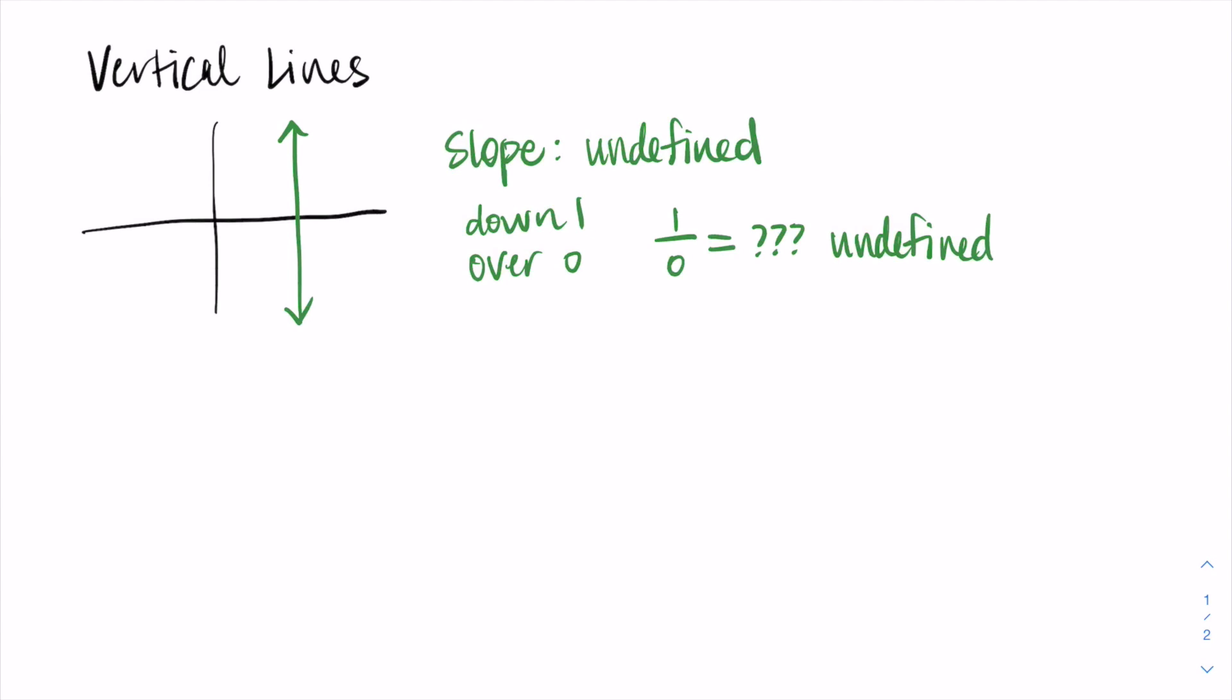For the formula, let's use a similar argument as horizontal lines. Points on the line have different y values, but the x value is always the same. We're always over the same amount of x. So we don't need to memorize a formula—just think, if this is at b on the x-axis, our equation is x equals b. All x values on that line equal b.